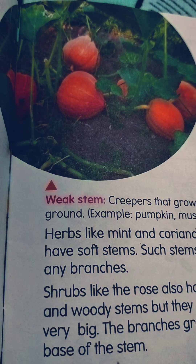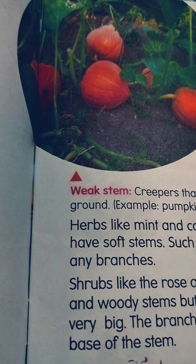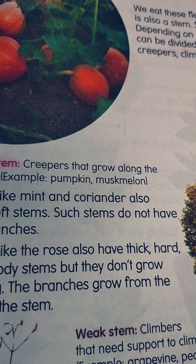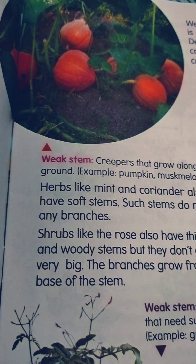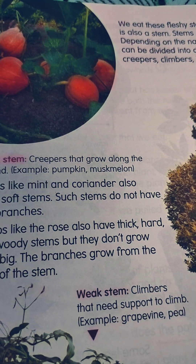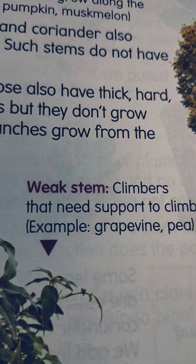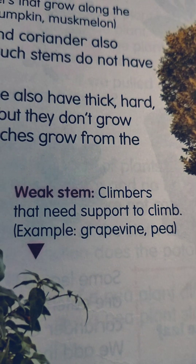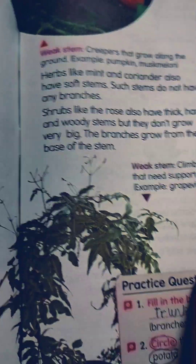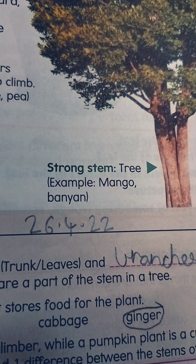Depending on the nature of their stems, plants can be divided into different groups such as creepers, climbers, herbs, shrubs, and trees. Weak stem creepers grow along the ground — for example, pumpkin and musk melon. Herbs like mint and coriander also have soft stems. Such stems do not have any branches. Shrubs like the rose have thick, hard, and woody stems but don't grow very big — branches grow from the base of the stem. Weak stem climbers need support to climb — for example, gram pea. Strong stem trees — for example, mango and banyan.